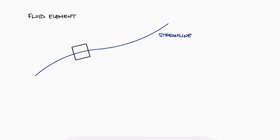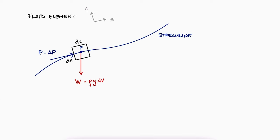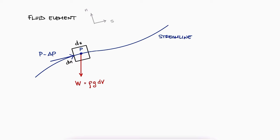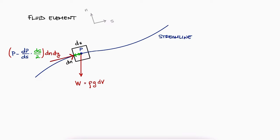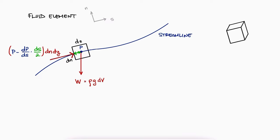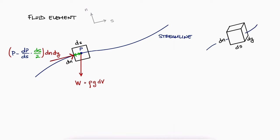Let's look at an infinitesimal element of fluid moving along the streamline. Its dimensions would be dn and ds corresponding to n and s, and we'd see its weight force going down. If we define the pressure at the center of this element as p, then the pressure from the left would be p minus delta_p, with delta_p being dp/ds times the distance from the center to the left side, ds over 2. Therefore, the force vector on that left side would be that pressure times the area dn dy, where the third dimension coming in or out of the screen is the y-axis.